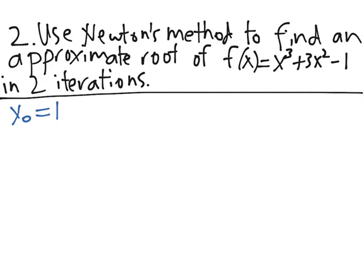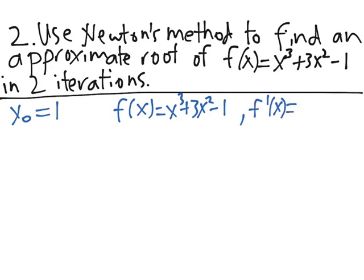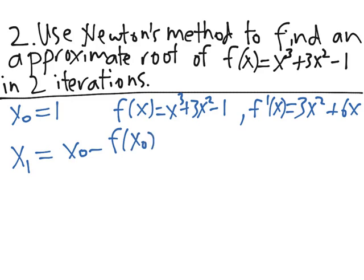We need to calculate the derivative of this function. f(x) = x³ + 3x² − 1, and f′(x) = 3x² + 6x. The first iteration formula gives us x₁ = x₀ − f(x₀) / f′(x₀).